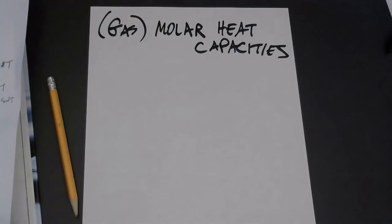Maybe it takes 2,000 joules to raise the temperature by one Kelvin at a particular pressure and temperature. But at a very different position on the PV diagram, you might have to dump in a different amount of energy to get that same one-degree increase. So it is more complicated. However, there are some specific simple processes for which we can define the heat capacity, and those are constant volume and constant pressure.